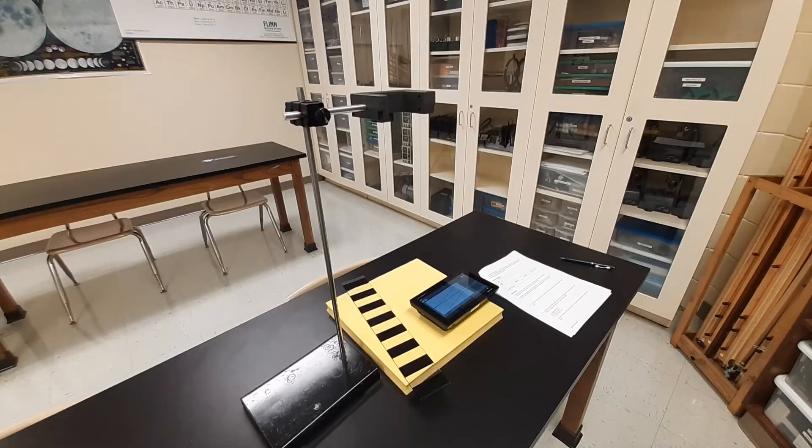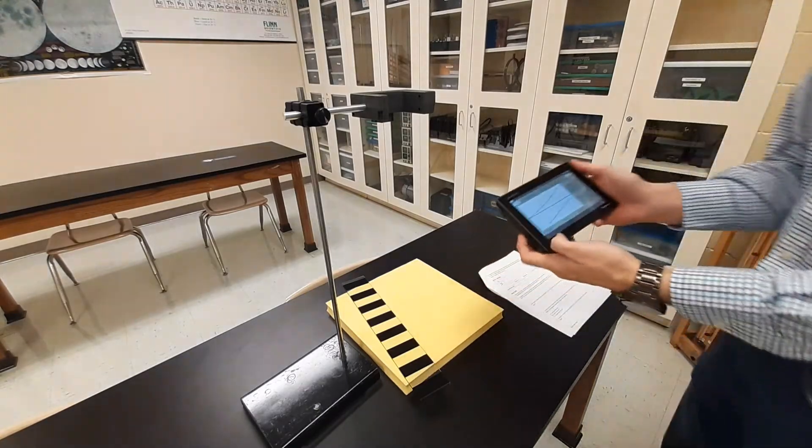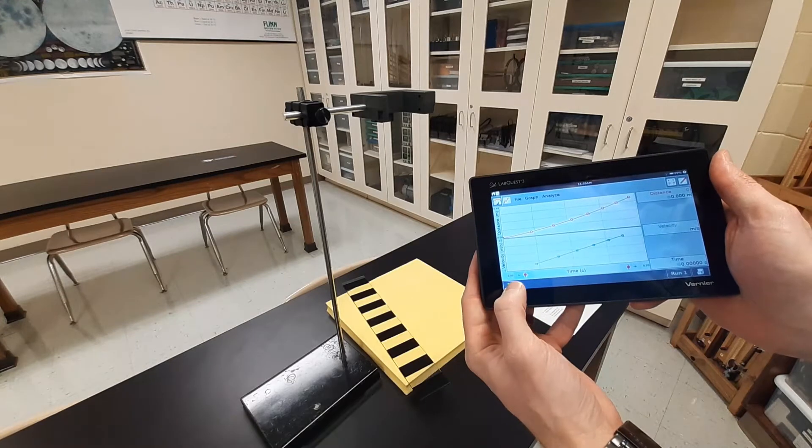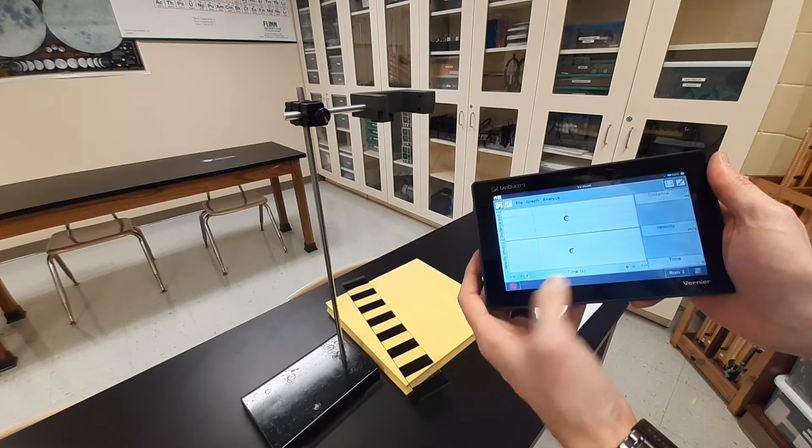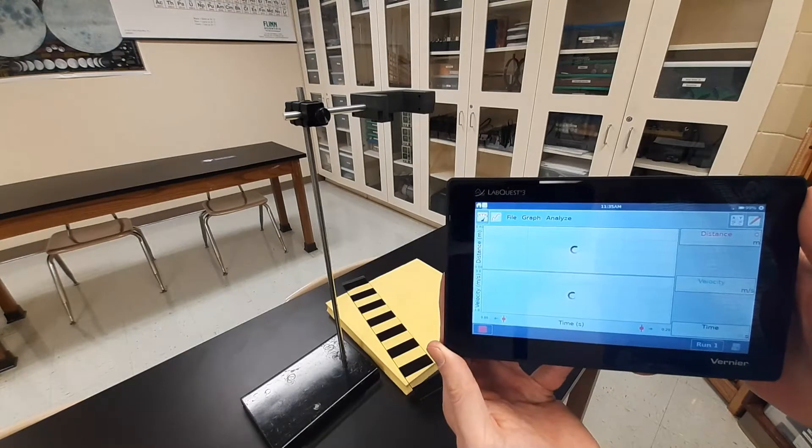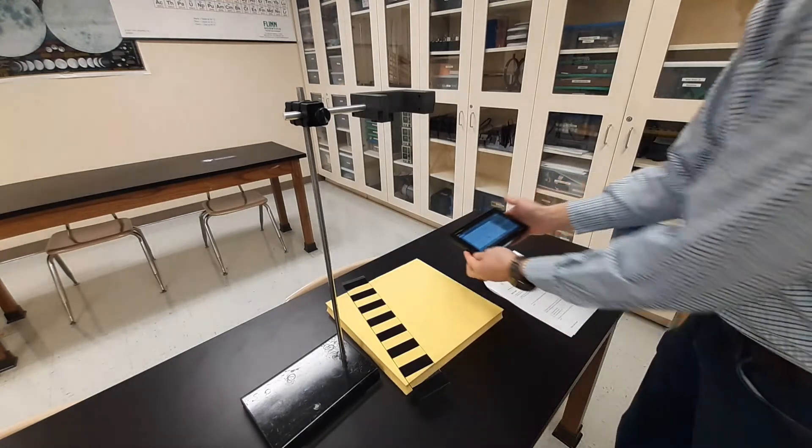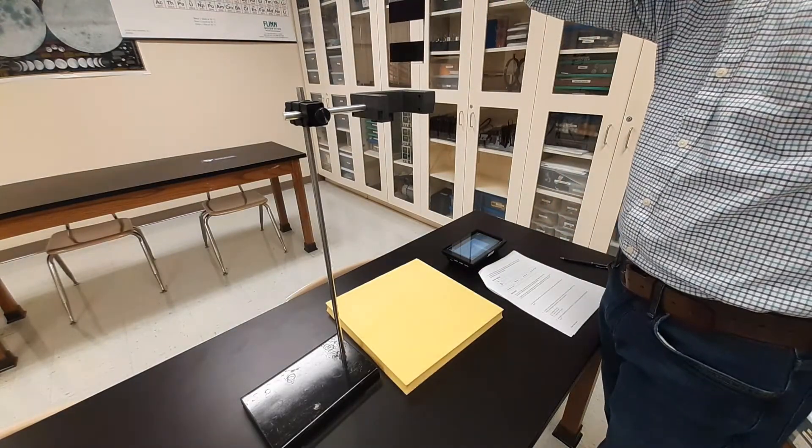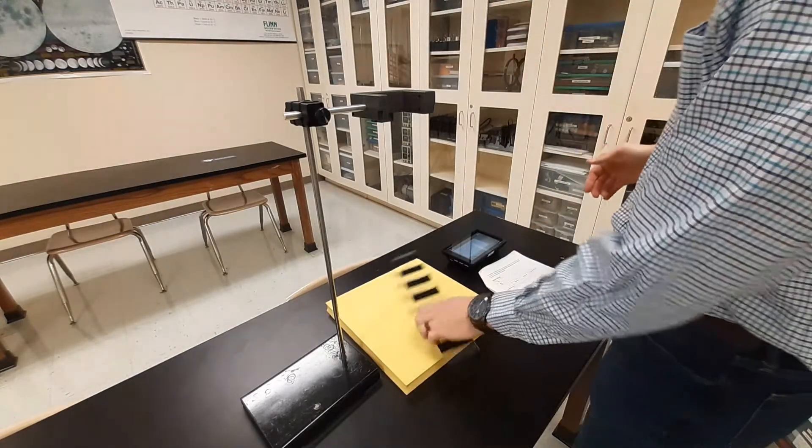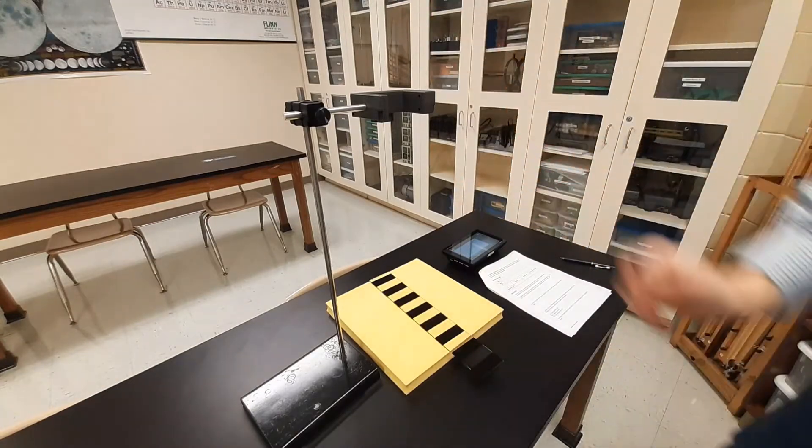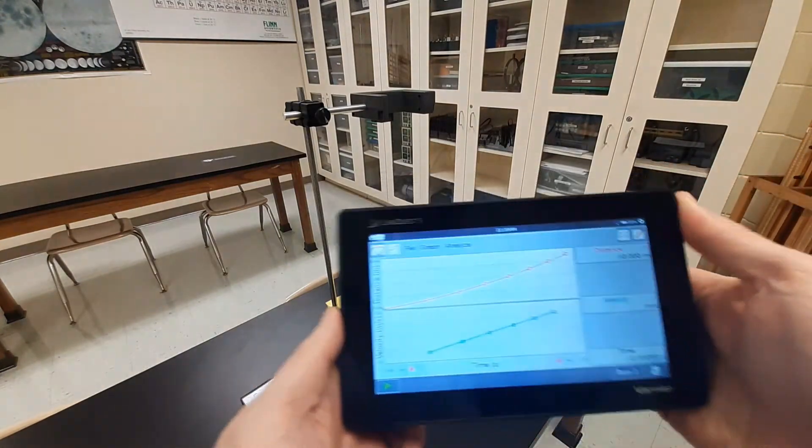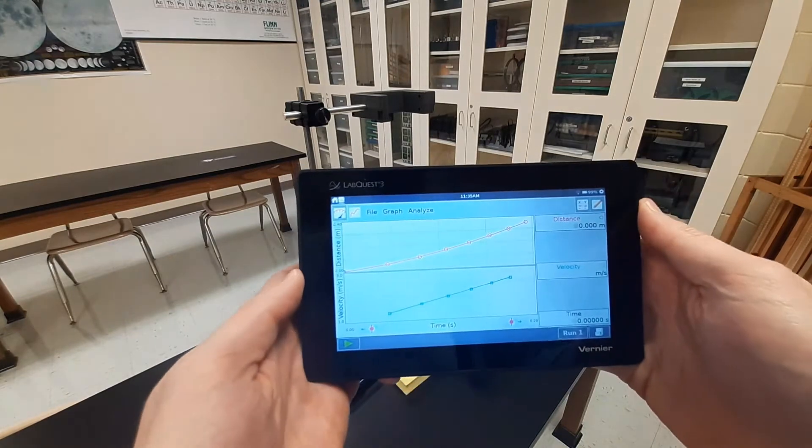We're ready now to do trial number one. So I'm going to take my lab quest. I'm going to tell it that I want to collect some data. There's a little collect button, a little play button right here. And then you see these little wheels start to spin, means it's just waiting on me. So I set this down and grab my picket fence. I'm going to hold it up here. I'm going to release it, and it falls right down through my photo gate. Now that's going to produce this graph, same basic shape as the ones I showed you just a minute ago.